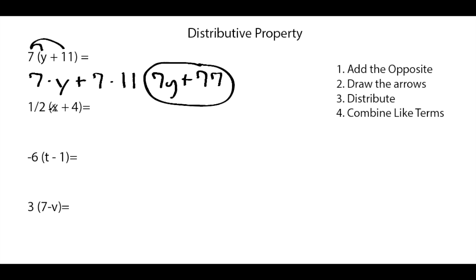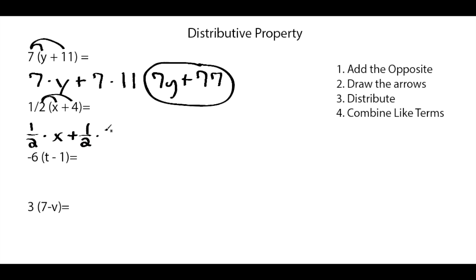Looking at the second one, we have one-half times the quantity x plus 4. First step, adding the opposite — since it is already addition, we do not have to follow this step. Second step, we draw our arrows from one-half into x and from one-half into 4. Following the arrows, we have one-half times x, bring down the addition sign, and one-half times 4.